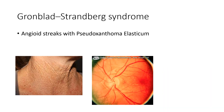Next is Grönblad-Strandberg syndrome. It is angioid streaks associated with pseudoxanthoma elasticum. This picture shows a case of Grönblad-Strandberg syndrome with pseudoxanthoma elasticum along with angioid streaks.